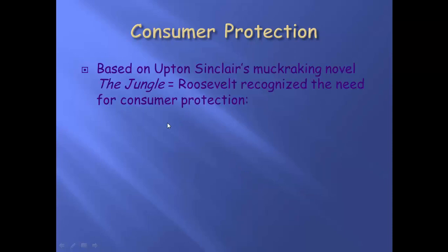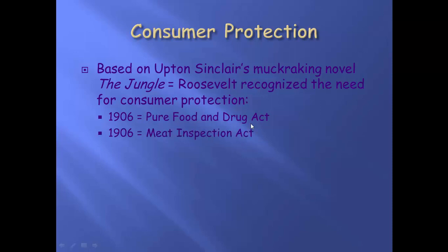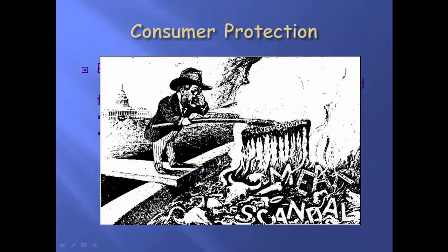The first thing is that Upton Sinclair was a muckraker — you should have learned about him already. He wrote a novel known as The Jungle. Roosevelt recognized the need for consumer protection after reading this book. Out of that, he pushed Congress to create the 1906 Pure Food and Drug Act and the 1906 Meat Inspection Act. Both of these laws made sure that the products we were eating were safe and that consumers, if they bought something, weren't going to get sick.